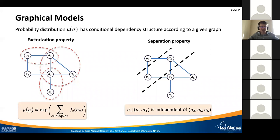Graphical models have two important properties. The first one is the factorization property, which translates into the fact that a positive probability distribution can be written as a Gibbs distribution with an energy function, which is the sum of local terms factorized according to the cliques of the graph.